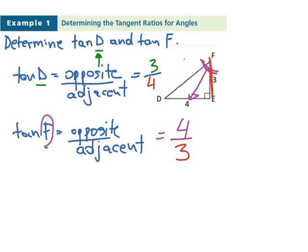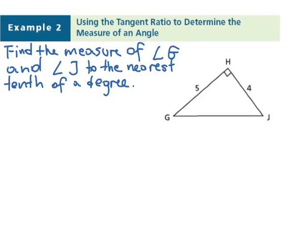Let's take a look at a different example. Let's find the measure of angle G and angle J to the nearest tenth of a degree. This sign right there is referred to as an angle—angle G in this case and angle J. I'm going to use the tangent ratio, which is also trigonometry, to find these angles.